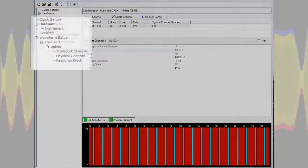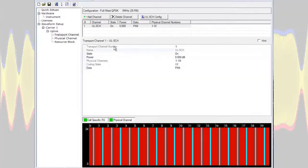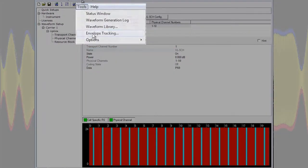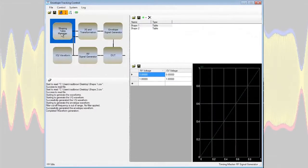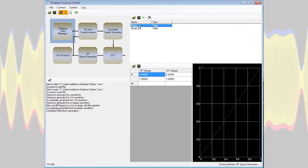So to start I already have an uplink LTE signal loaded into my configuration here. For the purposes of this demo I'm going to focus on the envelope tracking capability. In the envelope tracking window you can see that we have a shaping table and in fact I have different shaping tables already predefined. And I have full control over the number of points that I would put in that table. But I can use this to optimize my device under test for better efficiency, better linearity, or even better operating bandwidth.